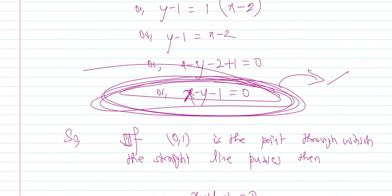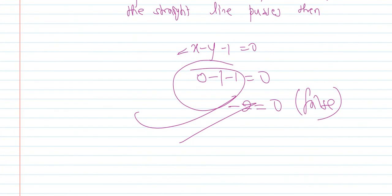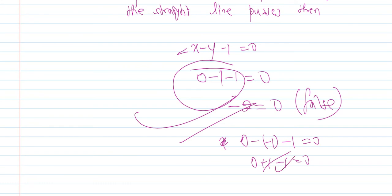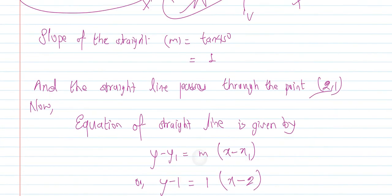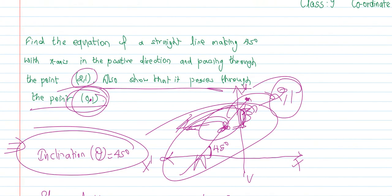Y is equal to 1 and X is equal to 0, so substituting: 0 - 1 - 1 = -2, which is not equal to 0. So the result is false — the straight line does not pass through the point (0, 1). This verifies our conclusion.